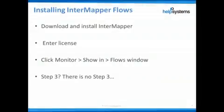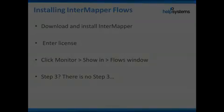Here are the steps for installing InterMapper Flows. It's built right into the InterMapper installer — simply download the software, install it, and enter your license. The evaluation license allows InterMapper Flows to listen to one exporter; a license for additional exporters is available. InterMapper Flows immediately starts listening for flow data to arrive, and once you configure your exporters, data will be displayed in the Flows window with no additional configuration required.